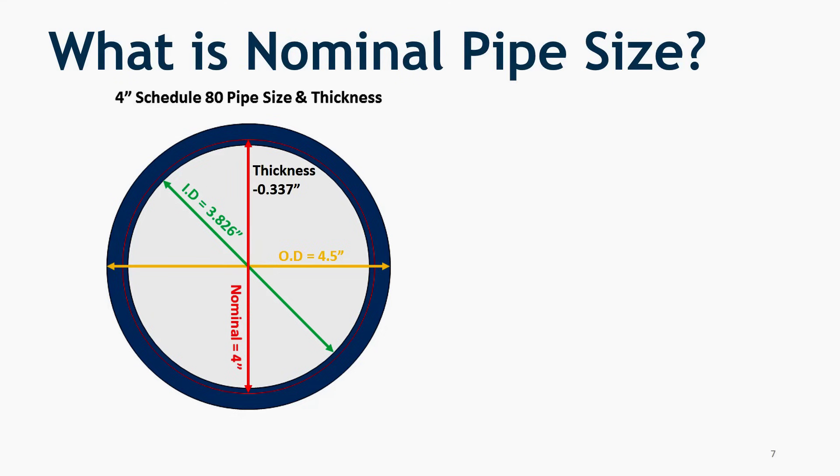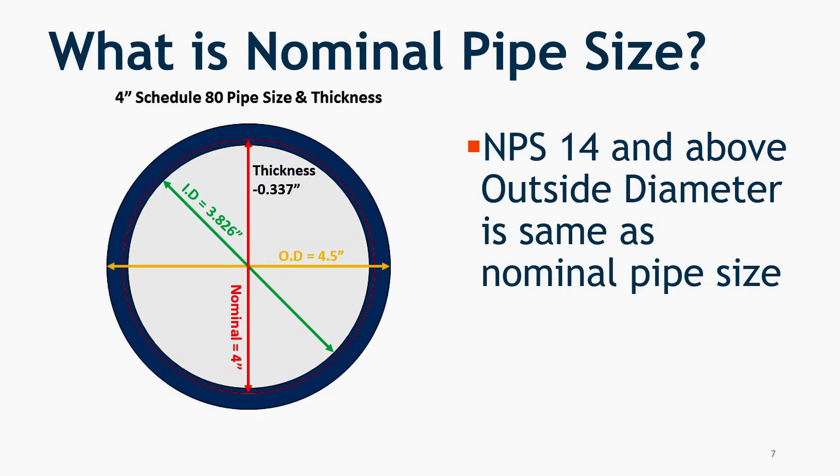However, for the pipe size NPS 14 and above, outside diameter is the same as the nominal pipe size.